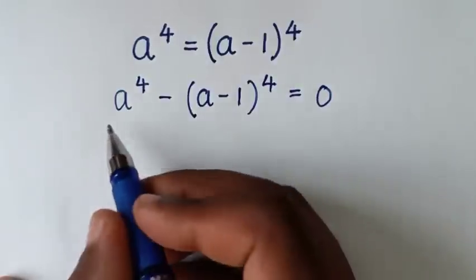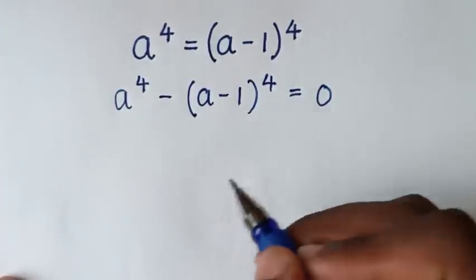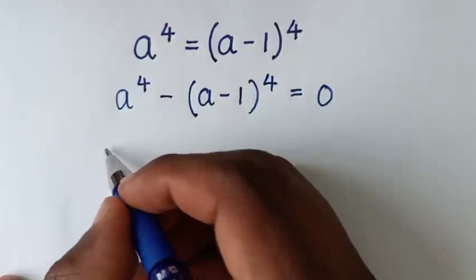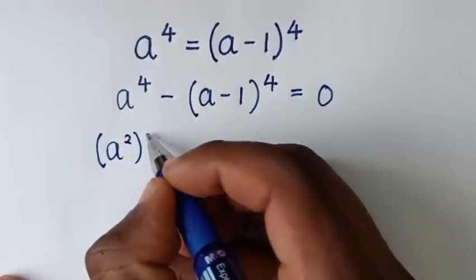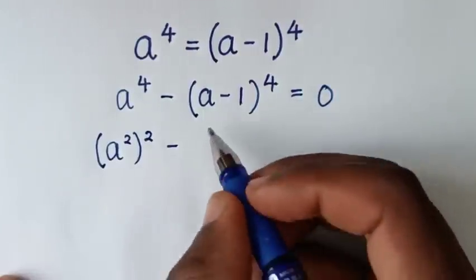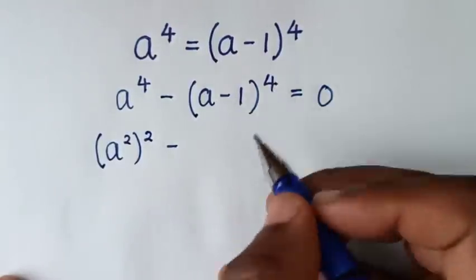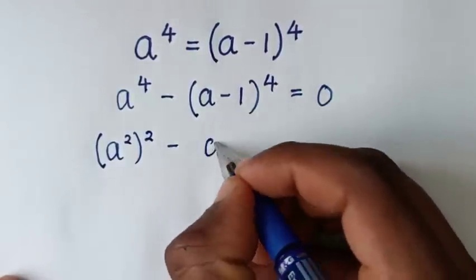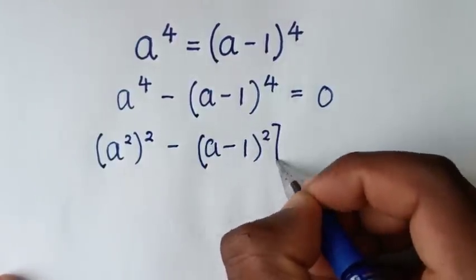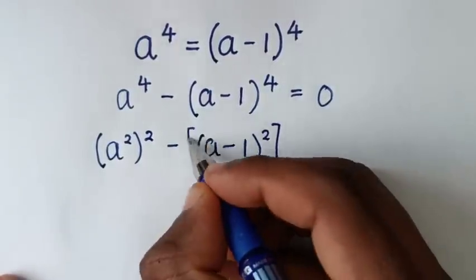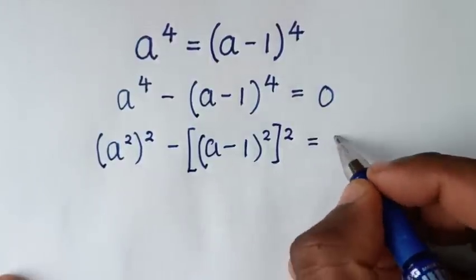Then in the next step, from here on the left side, we'll rewrite it in the form of a perfect square. So a to the power of 4 is (a²)², and (a-1) to the power of 4 is ((a-1)²)², giving us (a²)² minus ((a-1)²)² equals 0.